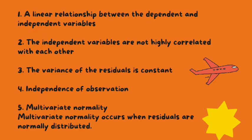Three, the variance of the residual is constant. Multiple linear regression assumes that the amount of error in the residuals is similar at each point of the linear model. This scenario is known as homoscedasticity.